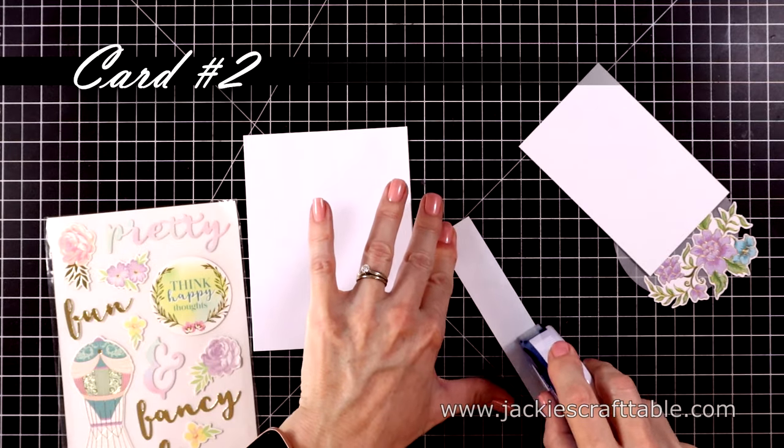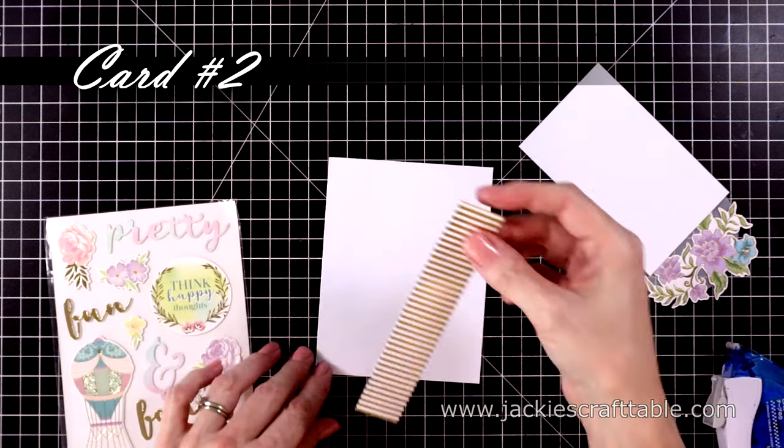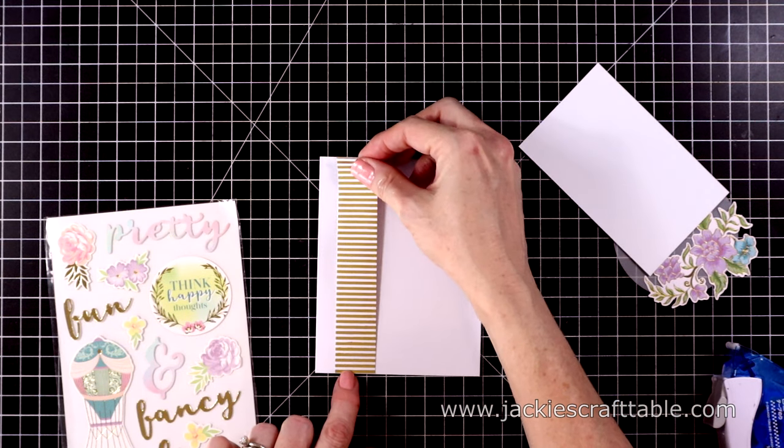On card number two, I cut down some more of the patterned paper. I love this foiled striped paper. I'm going to put a strip of that at the side of the card base.